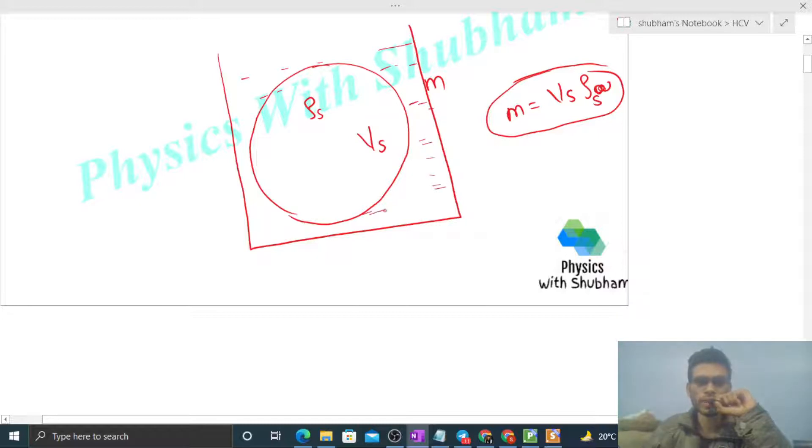Now what happens when the solid is completely immersed in water? The apparent weight will decrease. The actual weight is mg, and the apparent weight w_apparent will be mg minus buoyant force. When you draw the free body diagram, mg acts downward and upward direction has buoyant force, so the apparent weight decreases by fb.